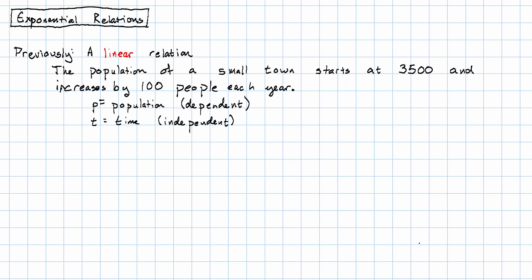Previously, we've met the idea of a linear relation. So for example, we might have a small town where the population is 3,500 at some starting point, and then it increases by 100 people each year.